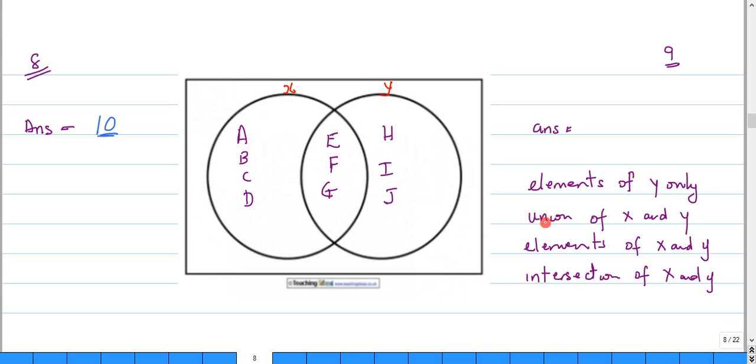Is it the elements of y only, the union of x and y, or the elements of x and y, or the intersection of x and y?